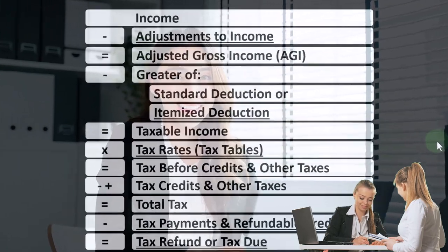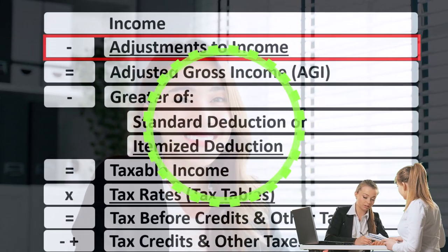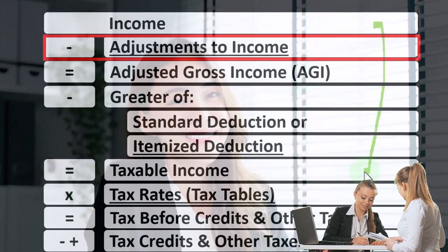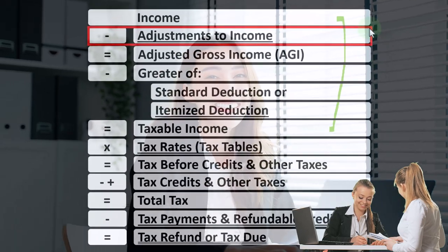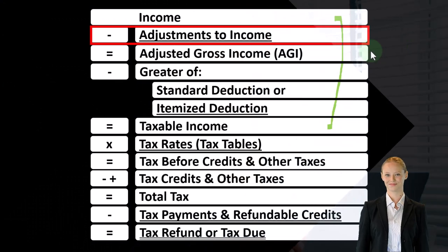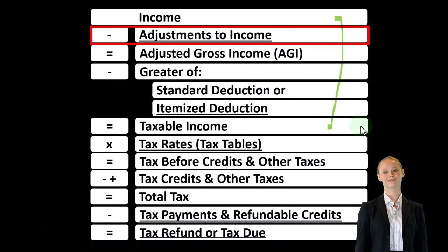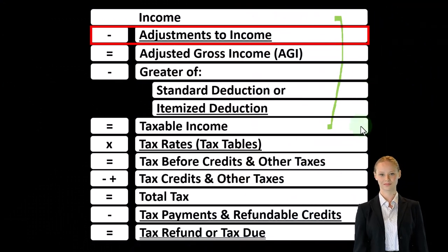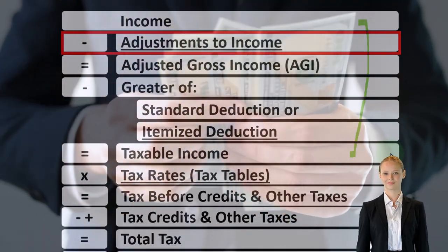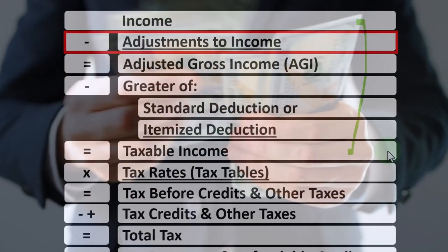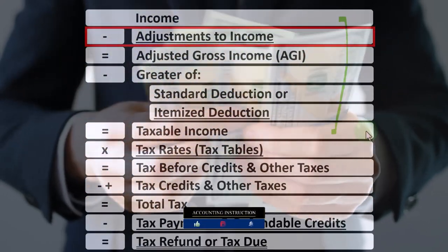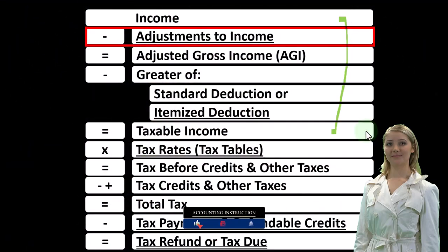Looking at our income tax formula, we're down on the second line — adjustments to income — remembering that the first half of the formula is basically an income statement where we have income minus the equivalent of the expenses, those being the deductions, getting us down to the equivalent of net income, that being taxable income. Everything's topsy-turvy; it's flipped on its head in terms of objectives because we want taxable income as low as possible, as opposed to normally where we want net income as high as possible.